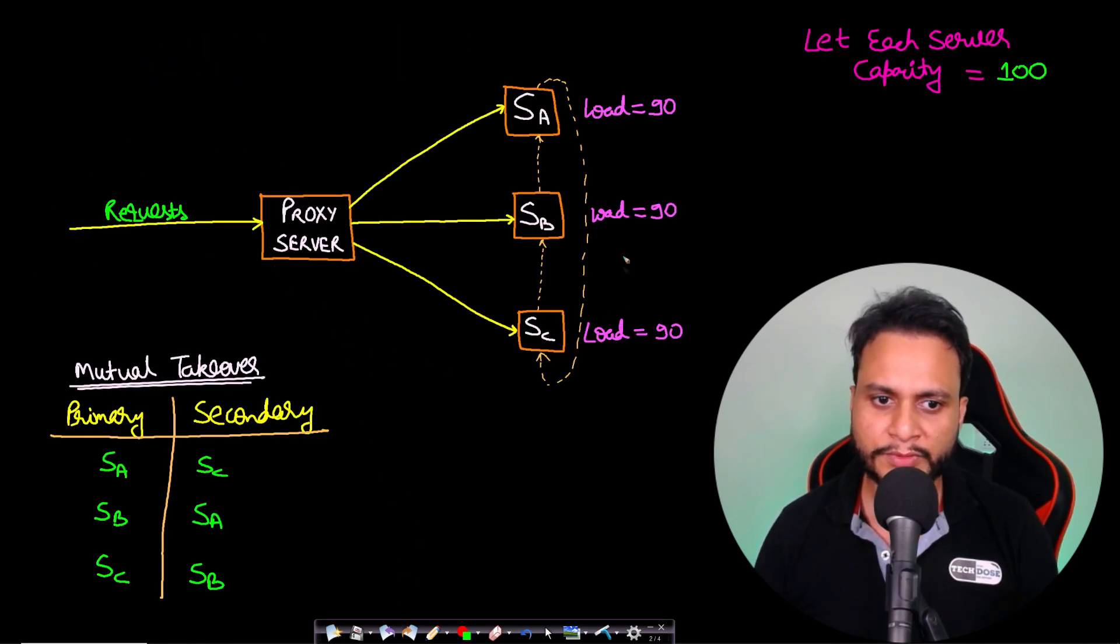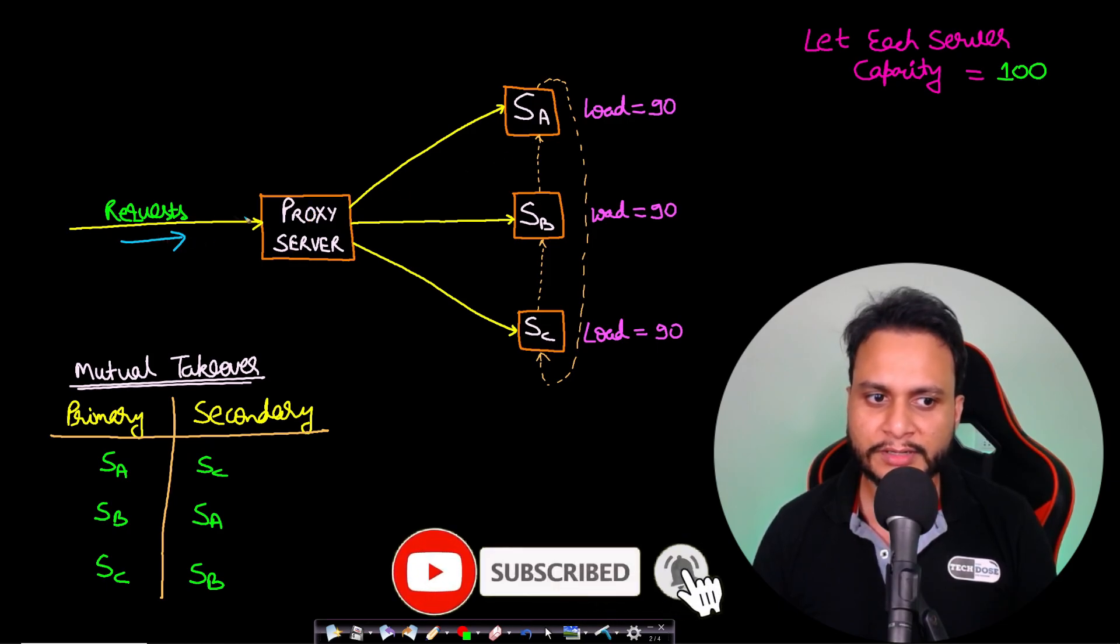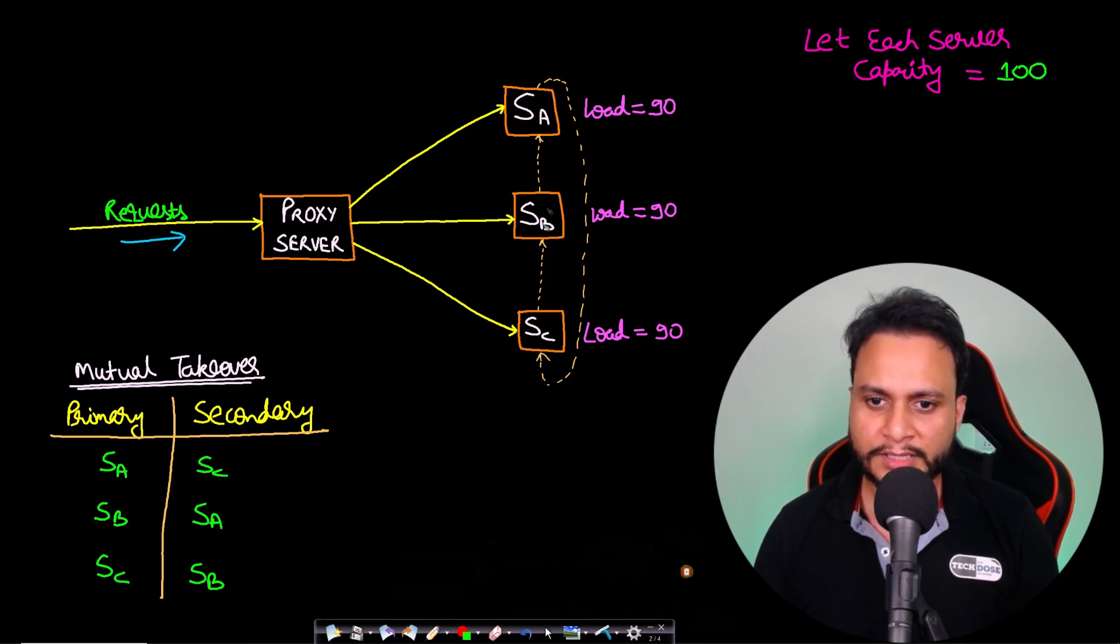Now let's see a scenario. Let's assume that we are given a setup where you have a proxy server, and the proxy server is taking requests from the users from one side. Then there are three servers SA, SB, and SC. All these are kind of primary servers which are serving the request from the users, so the proxy server is actually relaying the user request to these three servers.